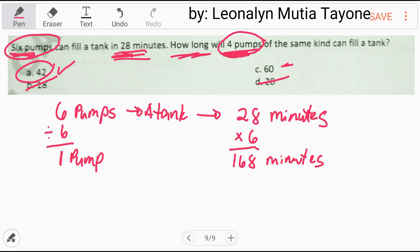Ang tanong, how long will four pumps of the same kind can fill a tank? Apat. Isa lang yan. I-multiply natin ng apat. Kung nag-multiply tayo ng apat dito, mag-divide tayo ng apat dito sa oras natin. Kasi apat na pumps na ang gagamitin. So mas mabilis. Kaya kung times four, divided by four dito sa kabila. 168 divided by four and that is 42 minutes. Kaya ang sagot dito ay 42 minutes.